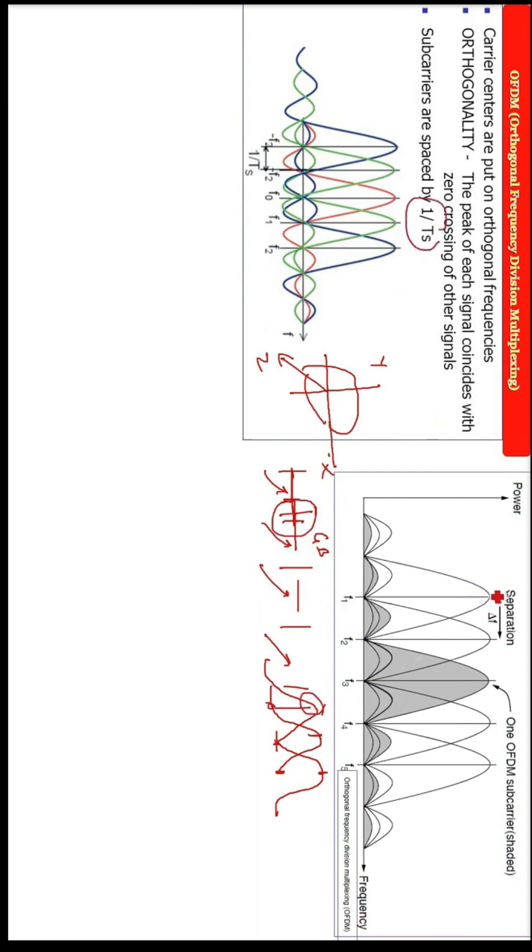So carrier centers are put on orthogonal frequency. The sub-carriers are spaced by 1 by t, that is the delta t. Frequency is again 1 by t.